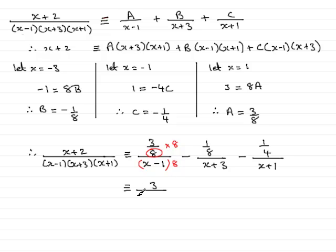Don't multiply the bracket out to give 8x minus 8, just leave it as 8 lots of x minus 1. And if we do the same thing here, multiply top and bottom by 8, it just gives me minus 1 over 8 lots of x plus 3. And on this one, we've got to multiply top and bottom by 4 to get rid of that, leaving us with minus 1 over 4 times the denominator x plus 1.